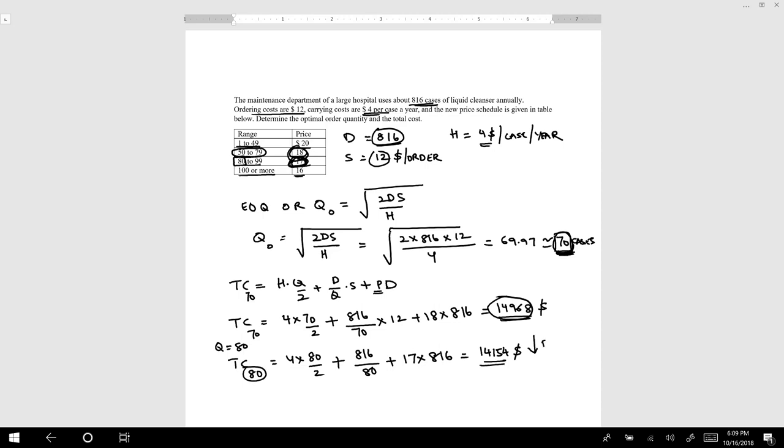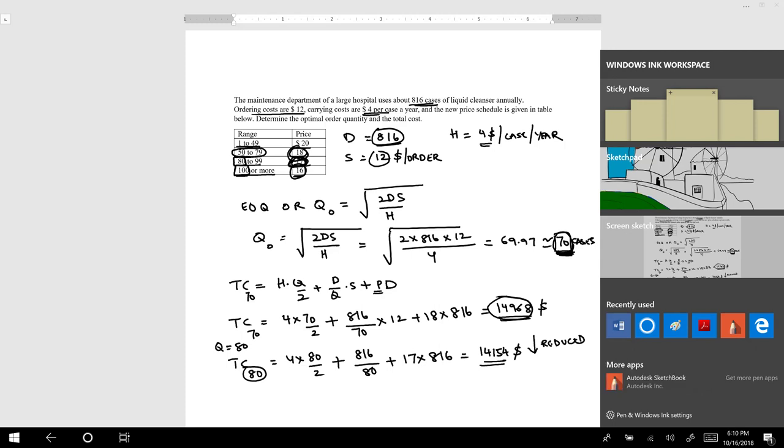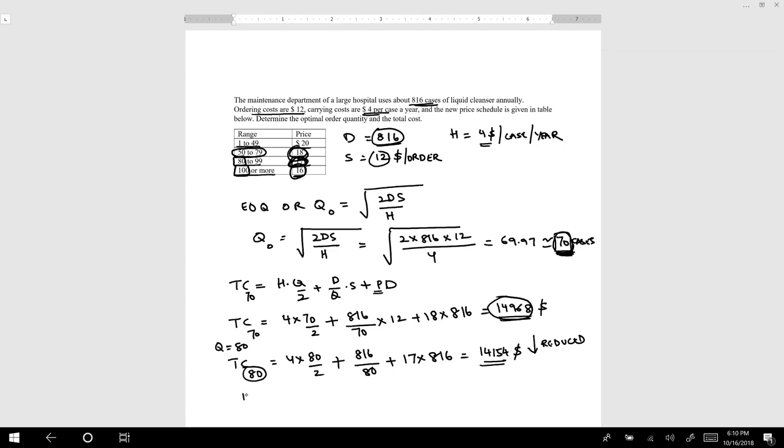Then we can ask ourselves, which value is nearest to this 70, and can I get a $16 price on a unit purchase? If I order 100, then I want to see what would be my total cost.